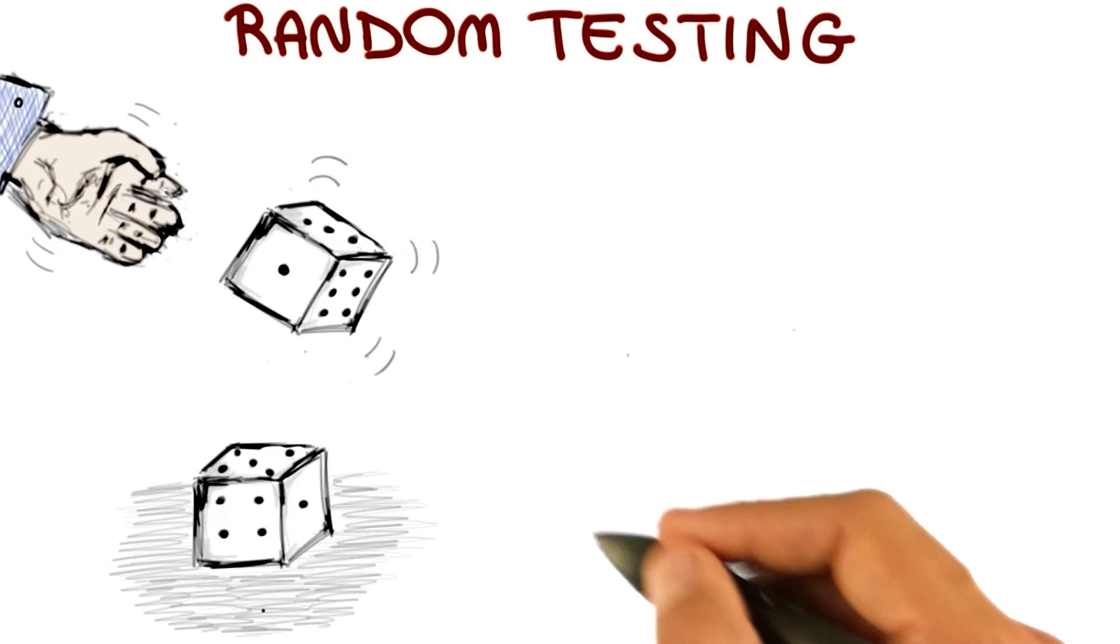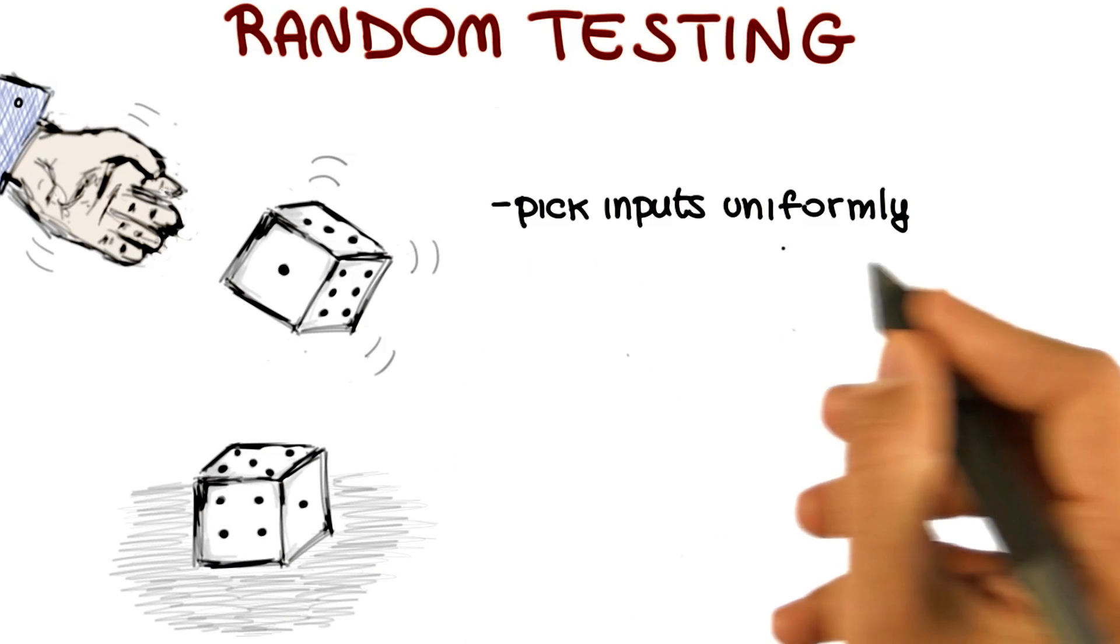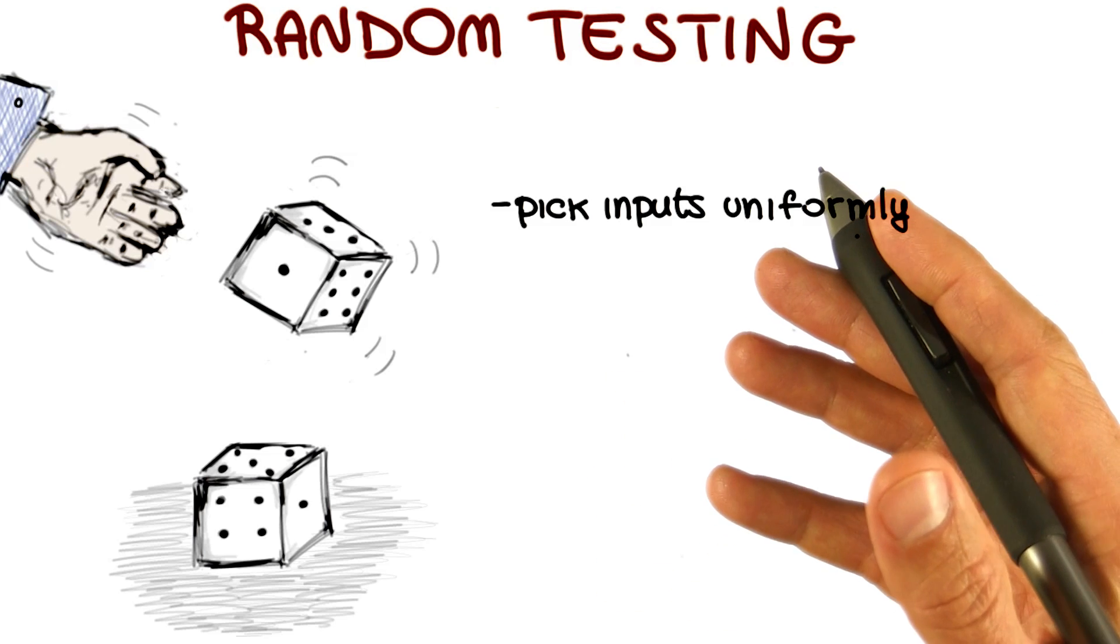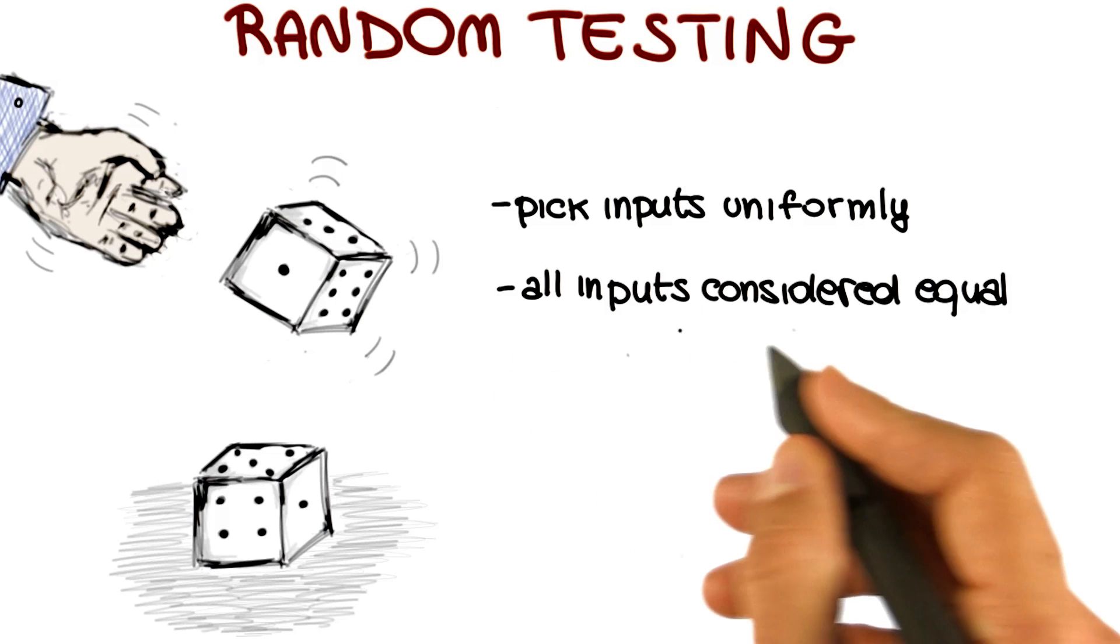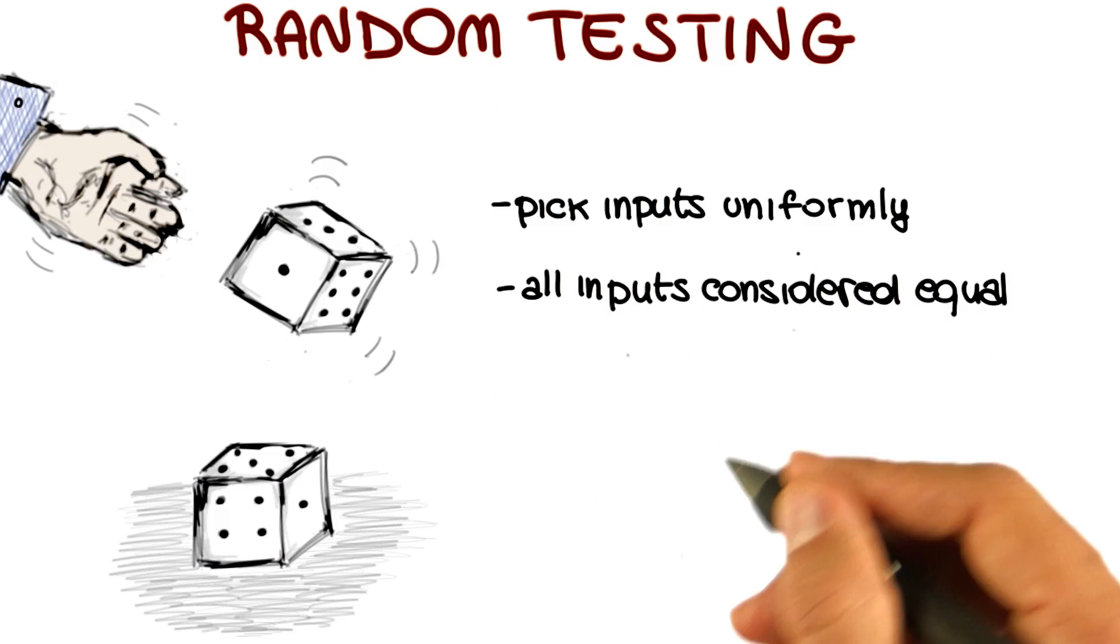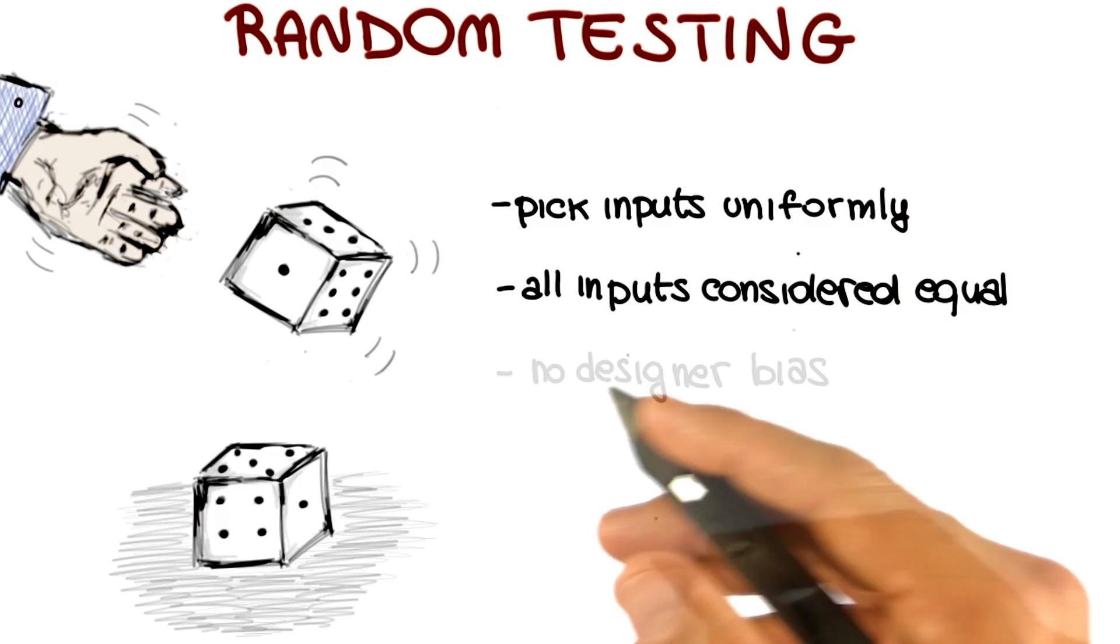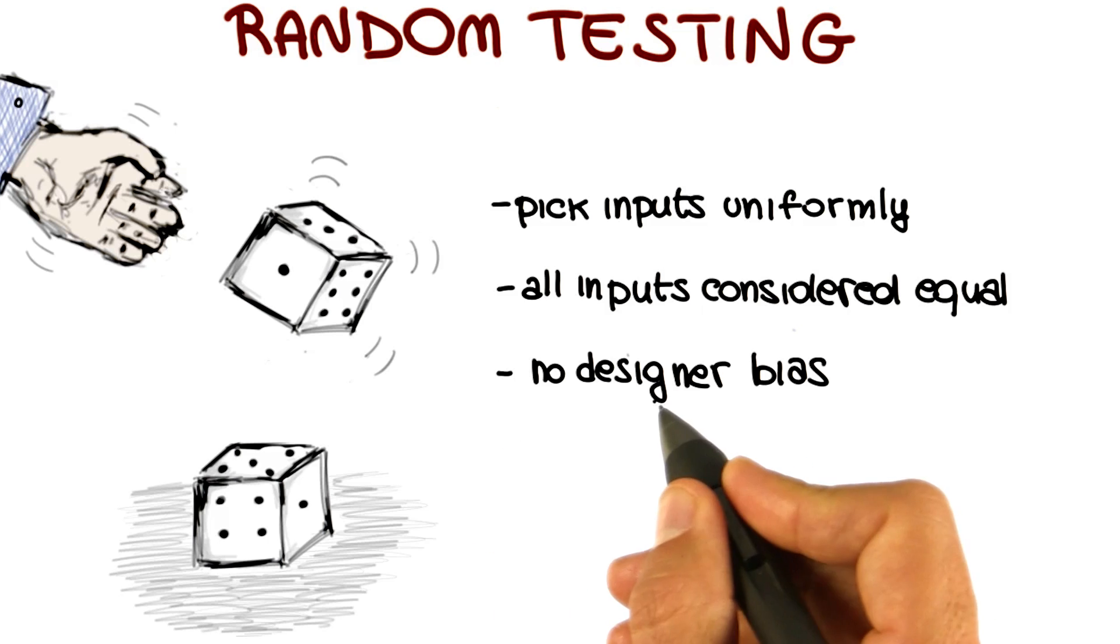And this will have several advantages. First, we will pick inputs uniformly. If we use a uniform distribution as the basis for our random testing, we will make no preferences. In other words, all inputs will be considered equal, of equal value. And what that means, in turn, is that random testing eliminates designer bias.